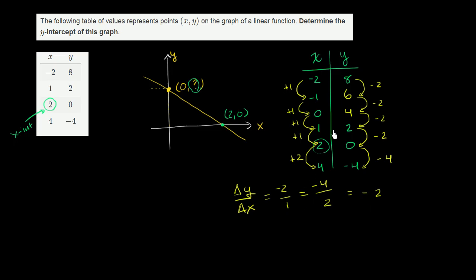But anyway, we actually answered the question before without even realizing it when we filled in all of these values. What is the y value when x equals 0? Well, the y value is 4. So the y-intercept here is 4.